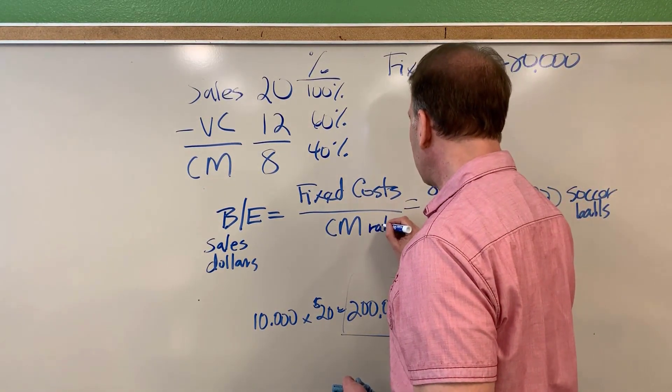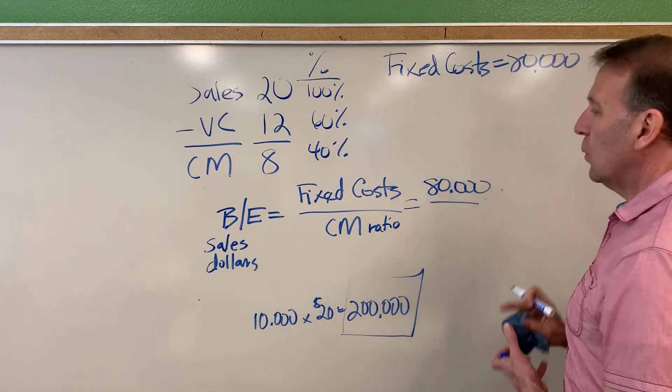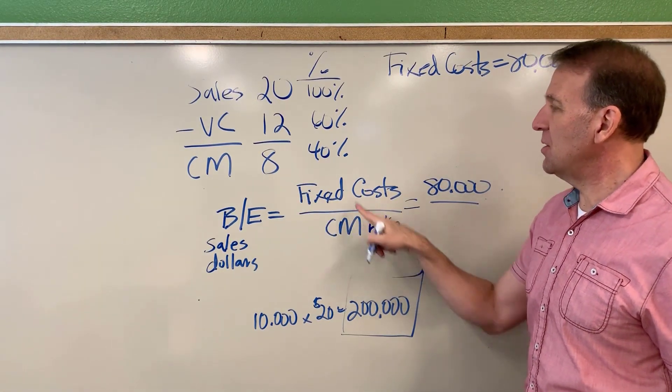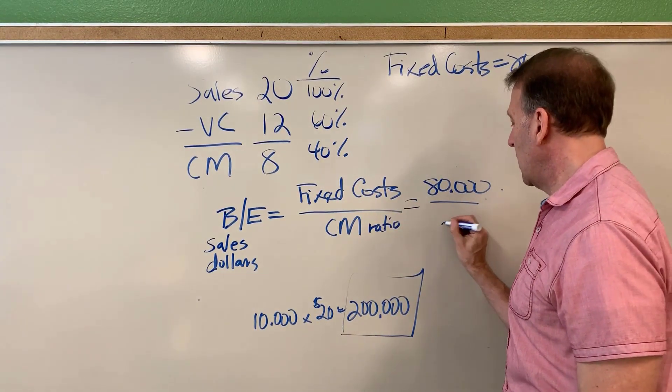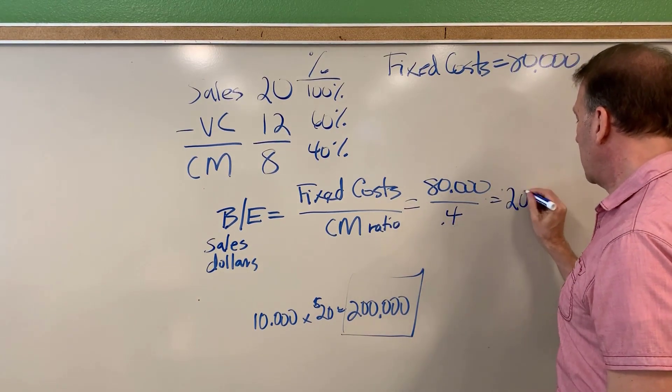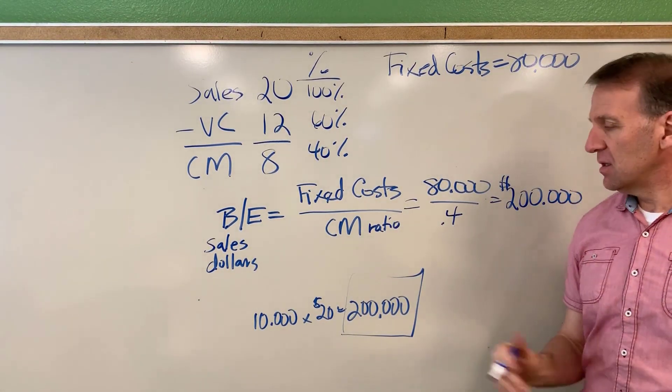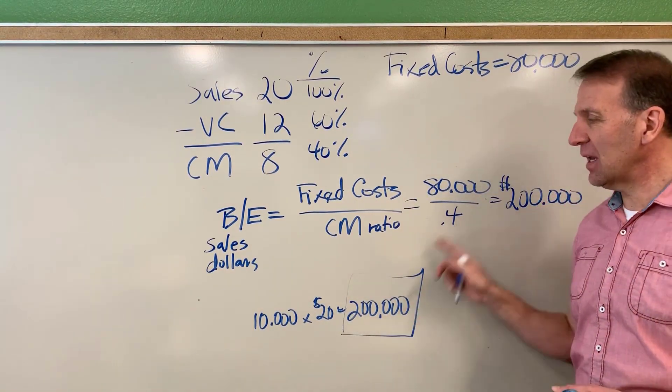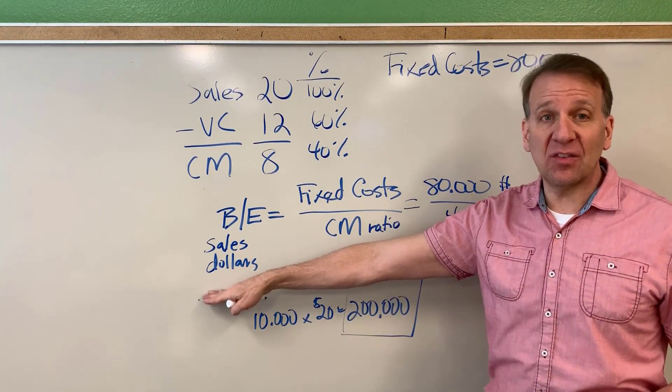If you want to do the break even in sales dollars in the formula, this is what we would need to do. We take fixed cost, we take the contribution margin, but instead of the unit, we're going to take the contribution margin ratio. We would take fixed cost 80,000 divided by 40%, which is 0.4, and that would get us once again $200,000 in sales that we would need. Either way is acceptable. More than likely, if you're working on homework, they're going to ask you to calculate the break even per unit and also break even in sales dollars.